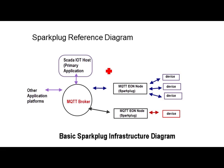When we talk about Sparkplug, we'll reference this diagram, which is taken from the specification. Everything revolves around the MQTT broker — an MQTT 3.1.1 broker — and it doesn't have to be special. All MQTT 3.1 brokers will support Sparkplug, as long as they support Retain Messages and Last Will and Testament, which they all do as part of the MQTT specification. So when something says it's Sparkplug compliant, almost all brokers would qualify unless they're very old.